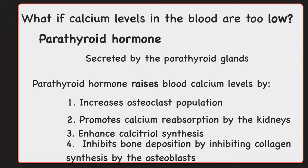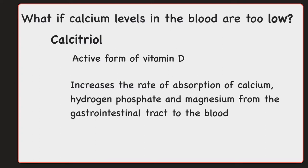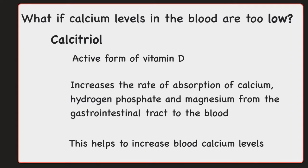Parathyroid hormone actually promotes the formation of the hormone calcitriol, which is the active form of vitamin D. Calcitriol increases the rate of calcium, hydrogen phosphate, and magnesium absorption from food within the gastrointestinal tract into the blood. So this is going to increase our absorption of calcium, hydrogen phosphate, and magnesium from the food that we're eating and digesting in the GI tract and bring that into the blood. By increasing this absorption from the gastrointestinal tract to the blood, it is going to in turn increase calcium levels in the blood.